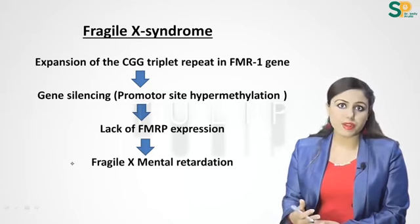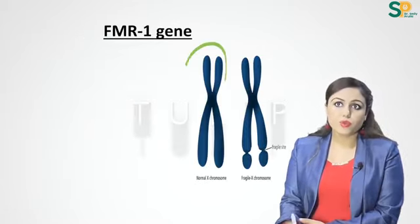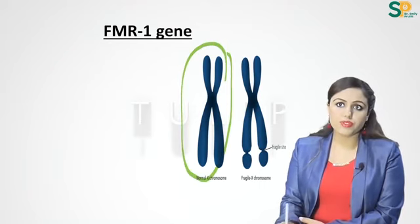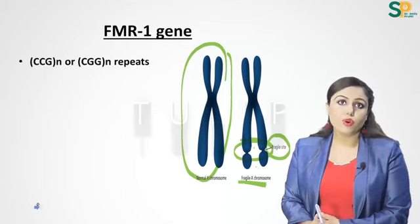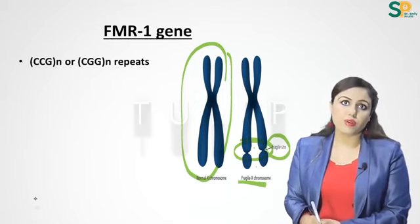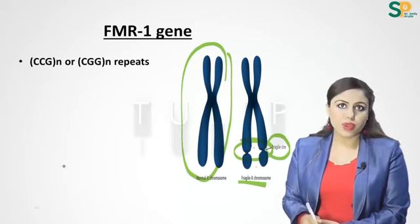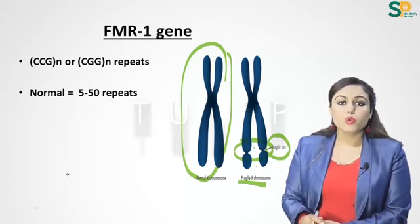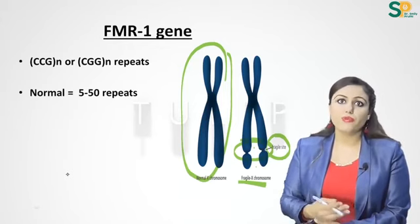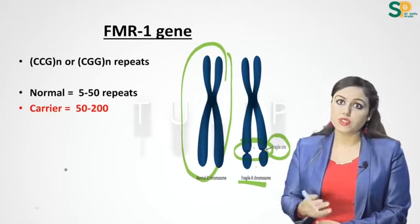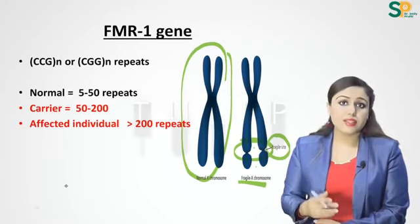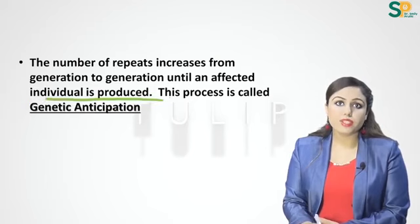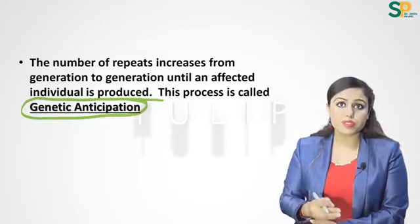In normal X chromosomes the structure is intact, but in Fragile X syndrome there is a fragile site on the long arm of the X chromosome due to CGG (or CCG) triplet repeats. In a normal person, repeats range from 5 to 50. In carrier patients, repeats are 50 to 200. In affected individuals, repeats are more than 200.